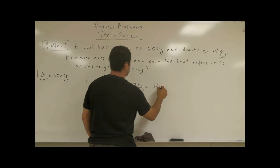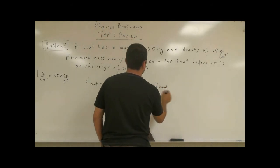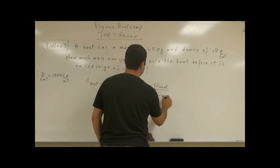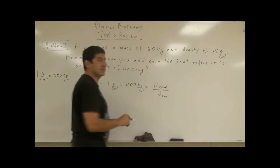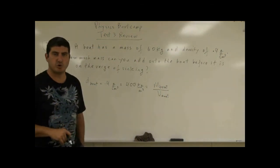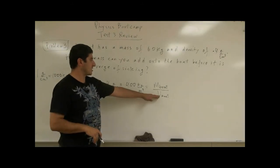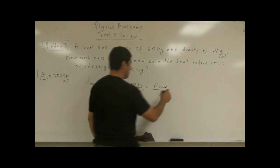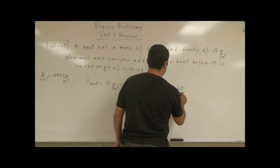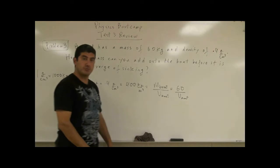That's equal to the mass of the boat divided by the volume of the boat. So the problem doesn't tell us at all about the volume of the boat. So using this information, we know the mass of the boat is 60. I can actually calculate the volume of the boat.